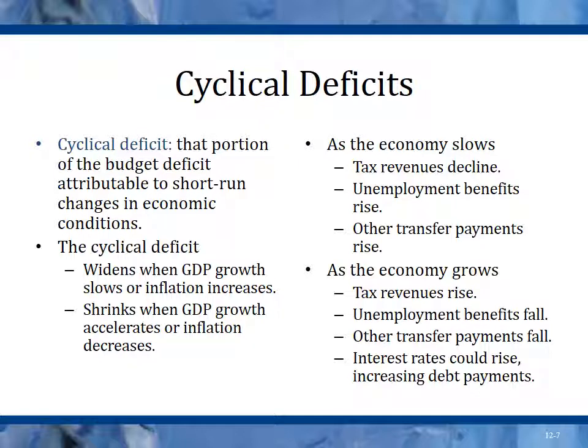Cyclical deficits are that portion of the budget deficit attributable to short-run changes in economic conditions. The cyclical deficit widens when GDP growth slows or inflation increases, and shrinks when GDP growth accelerates or inflation decreases. As the economy slows, taxes come down, unemployment benefits rise, and other transfer payments rise. During these cycles we create additional deficit — a larger deficit because our taxes go down and our payments go up.